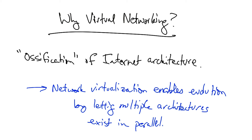In other words, network virtualization enables evolution because we didn't have to pick a winner for a replacement for IP. We could instead let multiple architectures exist in parallel.